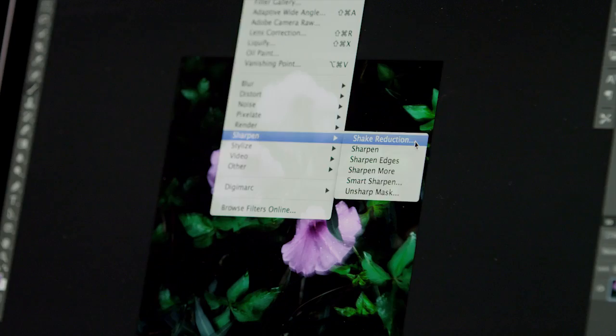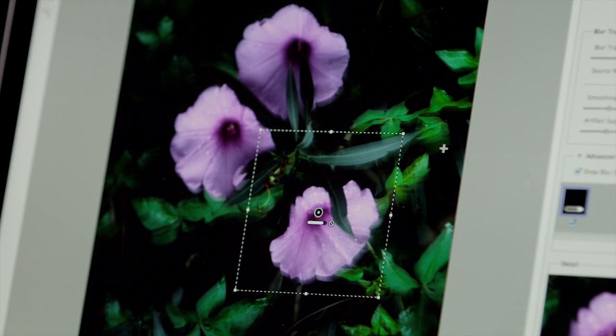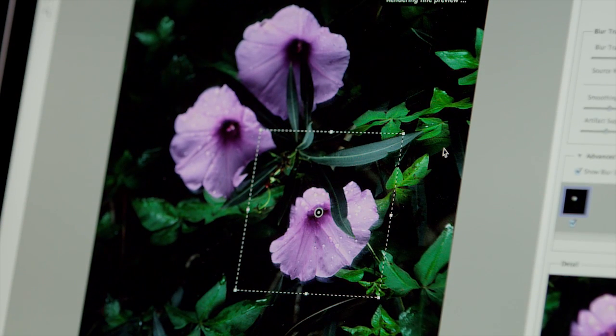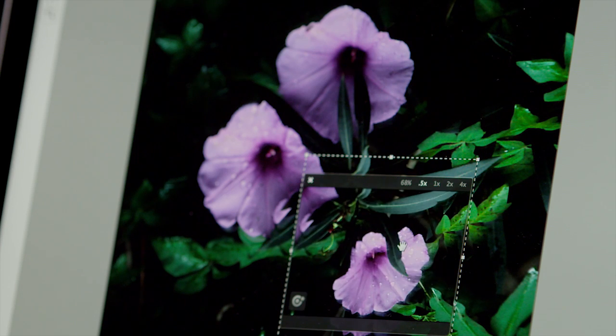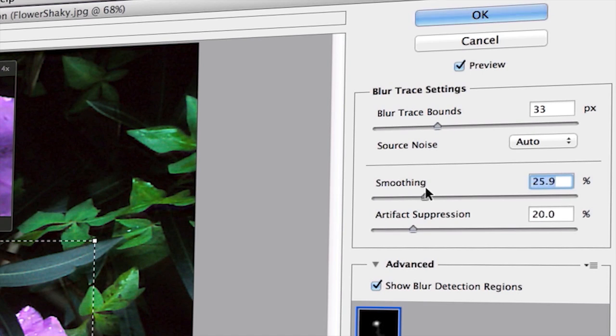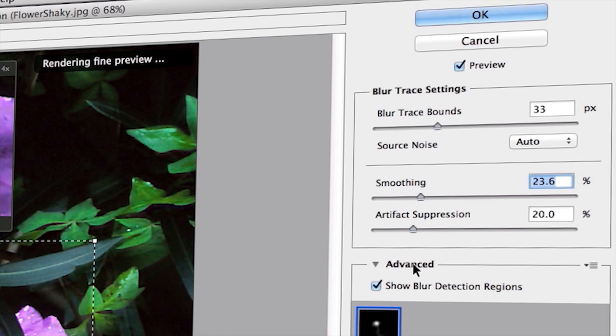Camera shake reduction will intelligently auto-detect the path of the blur and use this to restore your image. A simple interface makes it easy to analyze the image. When you're concerned about data recovery and less about the final look, you can use the advanced controls to tell Photoshop where to best detect the blur path.